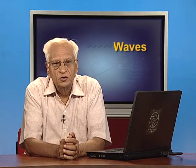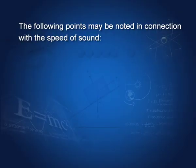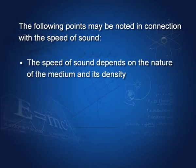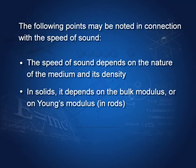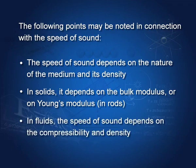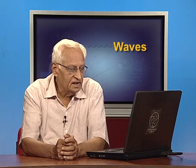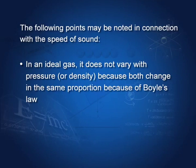The following points may be noted regarding the speed of sound. The speed depends on the nature of the medium and its density — we have B and rho in the formula. In solids, it depends on the bulk modulus or Young's modulus in rods or pipes. In fluids, it depends on compressibility and density. In an ideal gas, it does not vary with pressure or density because both change in the same proportion due to Boyle's law.